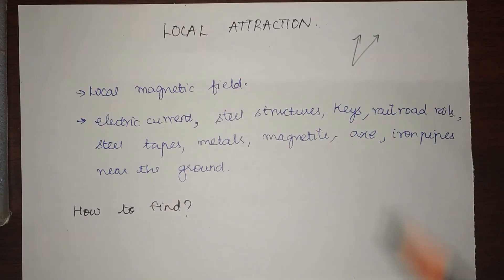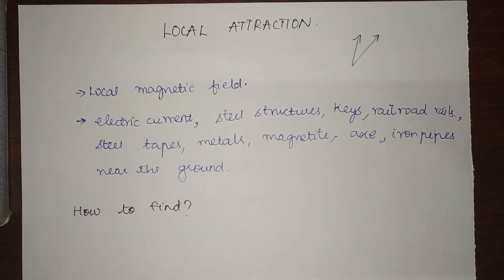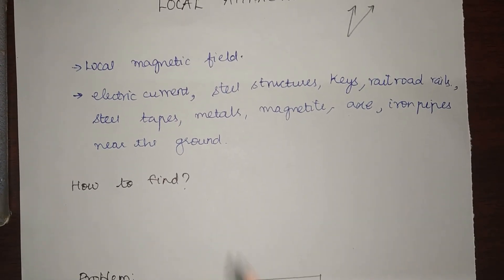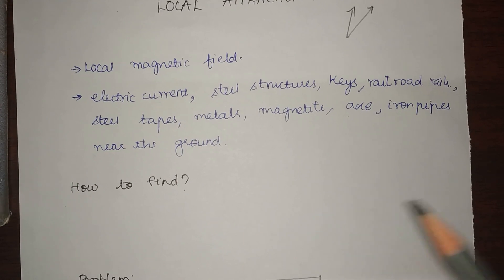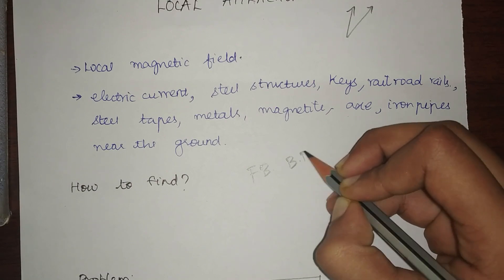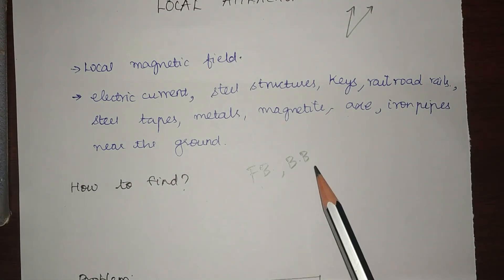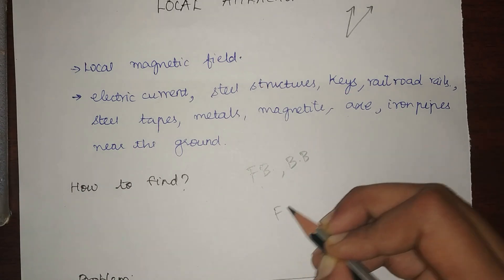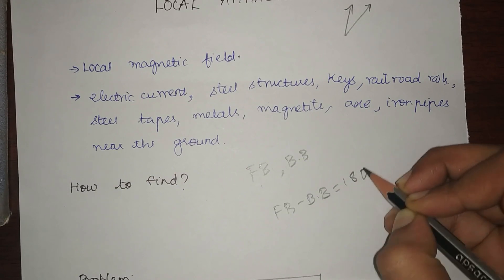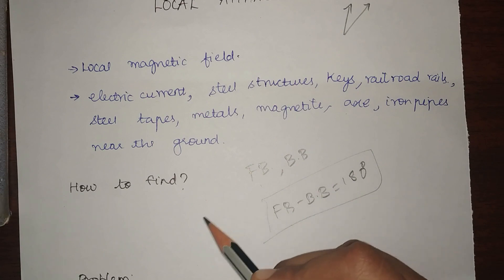We cannot find local attraction with a single observation. In order to detect it, we have to take various readings. The principle we use is from what we learned previously: the difference between fore bearing and back bearing will always be equal to 180 degrees.